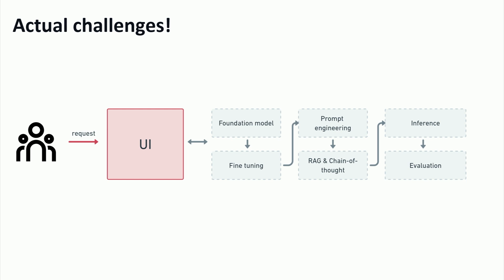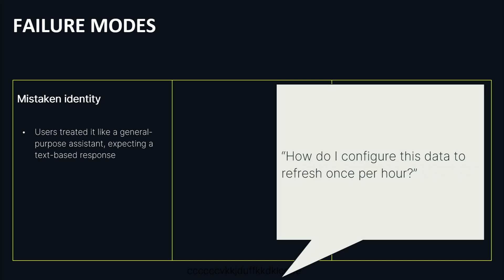So we went through all of these failed requests, tried to bucket them, and it came out to about three failure modes that were pretty common across the board across all of our customers. Number one: mistaken identity. If you give a user a text box and say "this is an AI, tell us what you want," a lot of them are going to assume it's a chatbot. Everybody knows ChatGPT. They're going to expect to put natural language in and get natural language out. And so we were getting questions like, "how do I configure this data to refresh once per hour?" — a very reasonable question, but it has nothing to do with chart configuration. And so you'd get nothing back or get an error, and the user doesn't know what to do next.